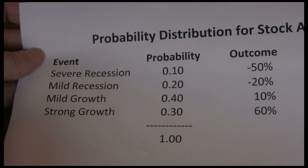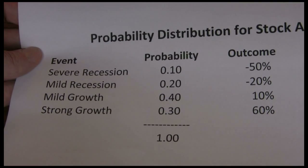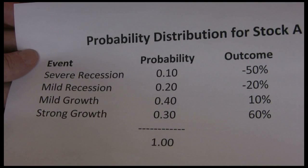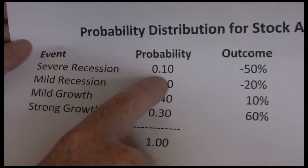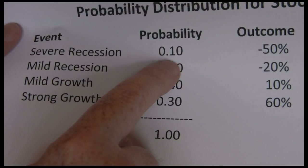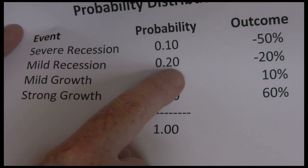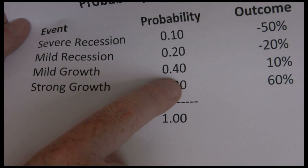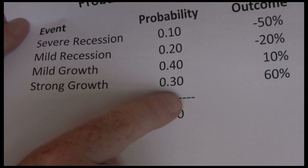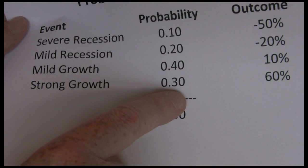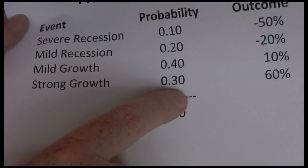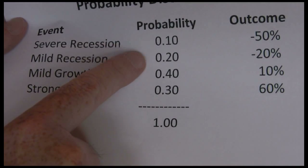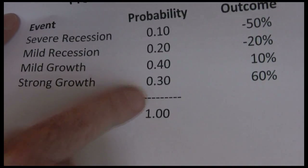Next we assign a probability to each scenario — how likely is it to happen? This is educated guesswork since nobody knows exactly what will occur. In my scenario, I think there's a 10% chance of a severe recession, a 20% chance of a mild recession, a 40% chance of mild growth — the most likely scenario — and a 30% chance of strong growth. Notice the probabilities add up to one: 0.1 plus 0.2 is 0.3, plus 0.4 is 0.7, plus 0.3 gives us one. Probabilities always have to add up to one to cover all scenarios.